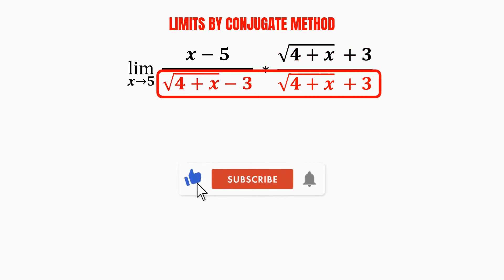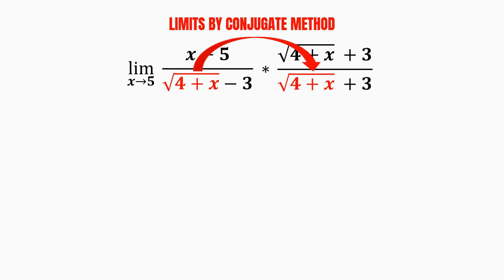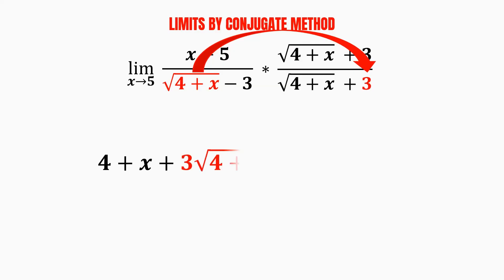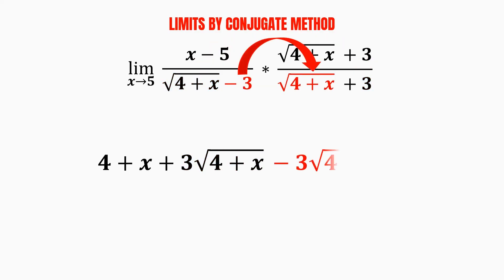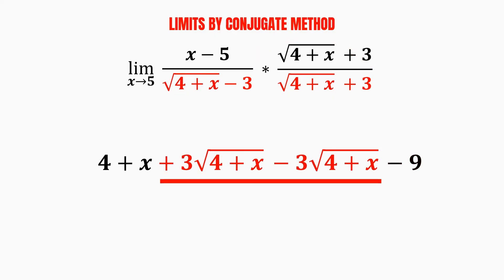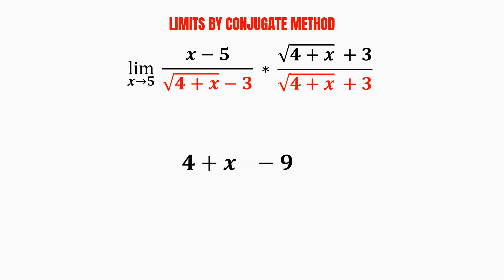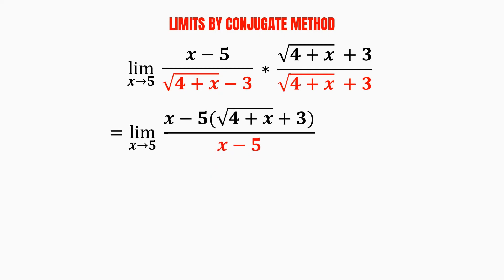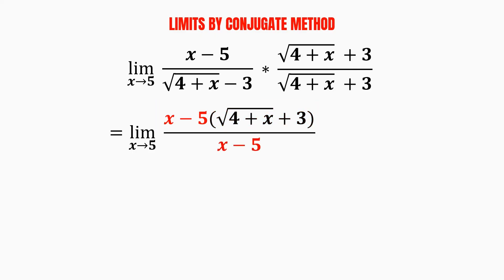Then we multiply both expressions in the denominator. Starting with the square root of 4 plus x multiplied by the square root of 4 plus x, we end up with 4 plus x without the square root. Multiplying the square root of 4 plus x by 3, and multiplying negative 3 by the square root of 4 plus x. Lastly, multiplying negative 3 by 3, we get negative 9. Just like before, as we have plus and minus the same term, we cancel them out. And we have 4 and minus 9, so we end up with negative 5. We're not required to expand the brackets in the numerator, as we have a common factor, which is the expression x minus 5 in both numerator and denominator, so we cancel them out.